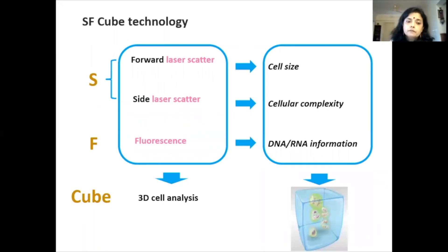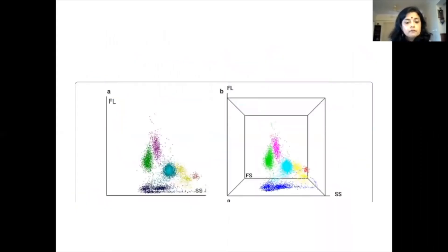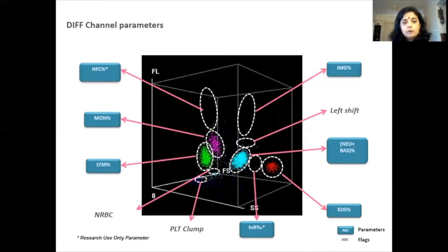The SF cube technology — where S is for scatter and F is for fluorescence — is available in many analyzers. What makes it unique is the 3D cell analysis, which gives an idea of cell size, cellular complexity, and cellular composition including DNA and RNA information. Looking at the forward scatter and side scatter histogram available in most machines, what is unique here is a 3D interpretation of the cells. In the DIF channel, the parameters break up accordingly.